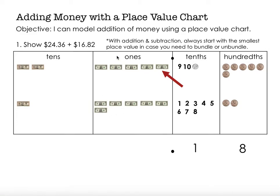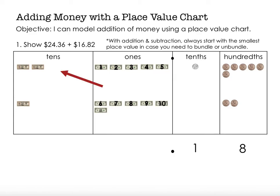Now I move to my next place value, which is the ones place. I can see I have two sets of five, so I have ten plus one more — I have eleven ones. Again, when I have ten or more, I can bundle them up and exchange them for the next higher place value. So ten ones — one, two, three, four, five, six, seven, eight, nine, ten — ten ones can be exchanged for one ten. So I'll go ahead and swap those out, and I'm left with only one one-dollar bill in my ones place, so I'm going to write that in my ones place.